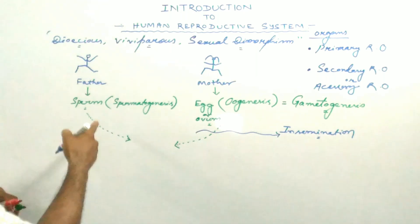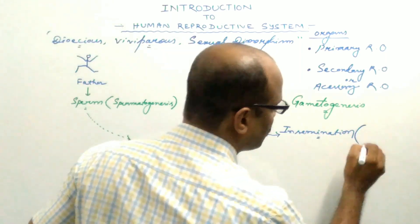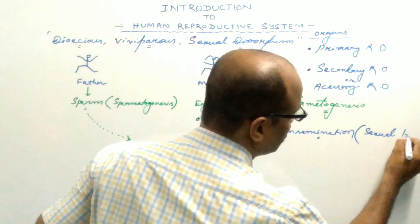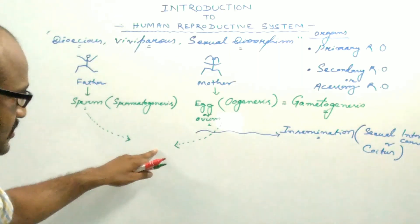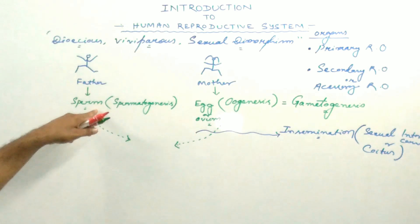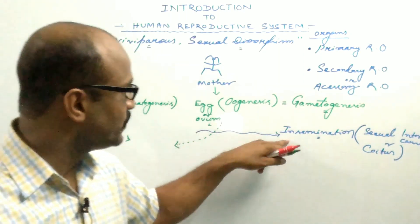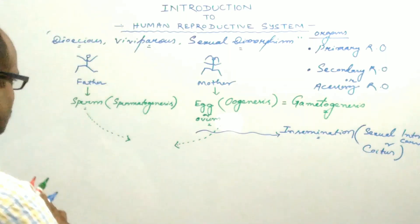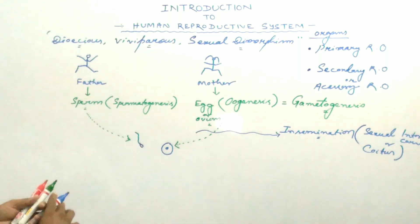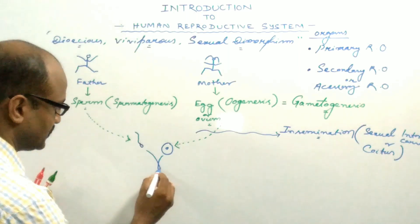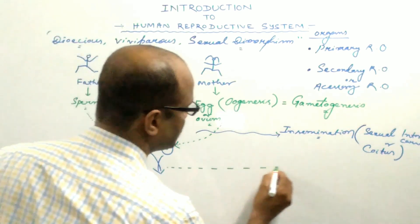Insemination is the process by which the sperms are deposited into the vagina of the female. It takes place by means of sexual intercourse, copulation, or coitus. During copulation, the male individual inserts the erected penis into the vagina of the female and deposits the sperm. After insemination, the motile sperm and the immotile ovum undergo fusion, known as fertilization.